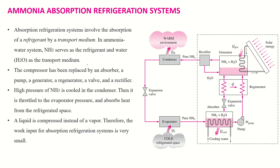The different processes happening in absorption refrigeration systems — the most basic is the ammonia absorption refrigeration system. In this system, ammonia serves as the refrigerant and water acts as a transport medium. On the right side of this dotted line is the main difference between the vapor compression cycle and the vapor absorption cycle. The devices on the left are the same in both cycles.